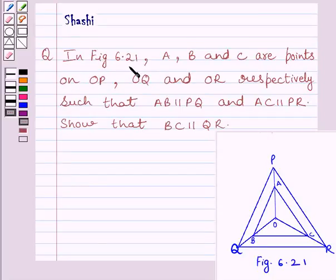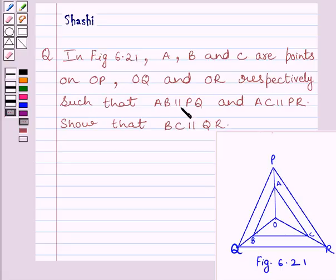In figure 6.21, A, B and C are points on OB, OQ and OR respectively, such that AB is parallel to PQ and AC is parallel to PR. Show that BC is parallel to QR.